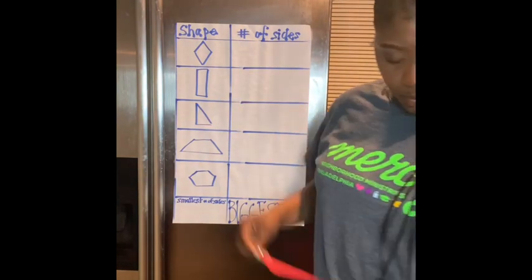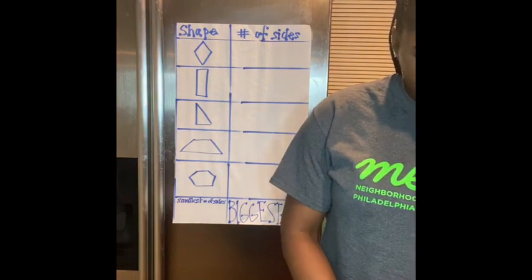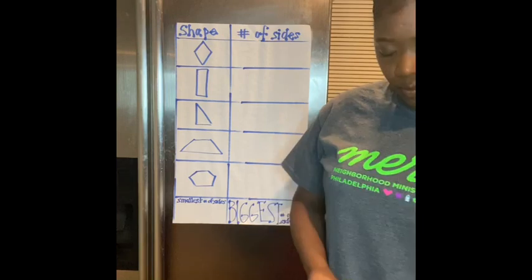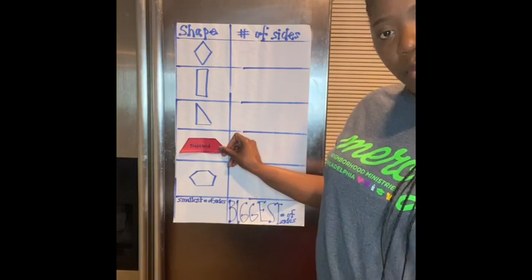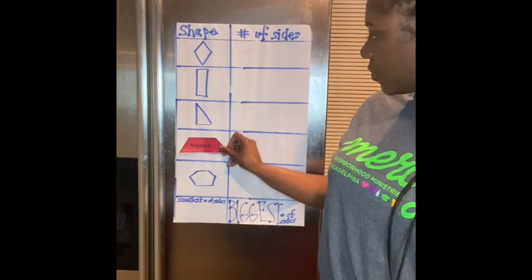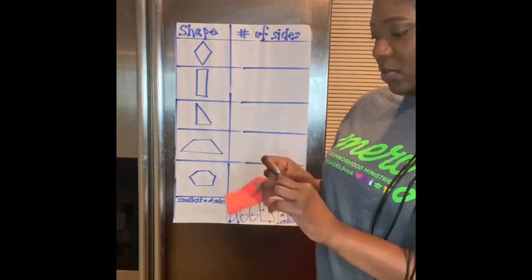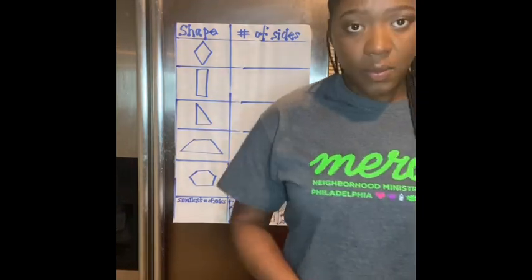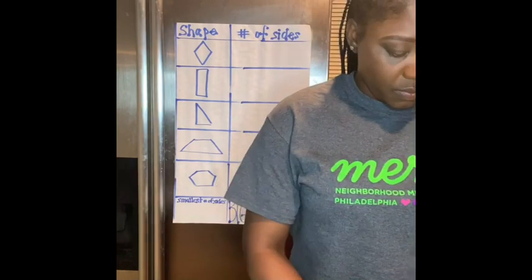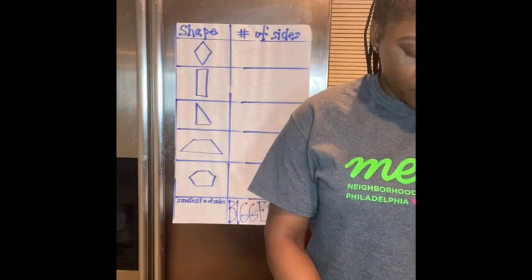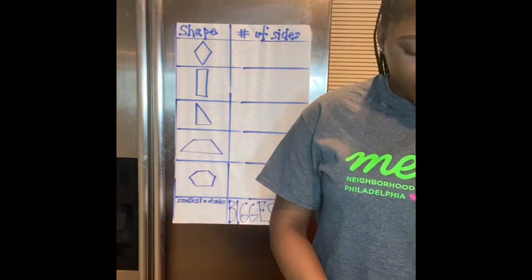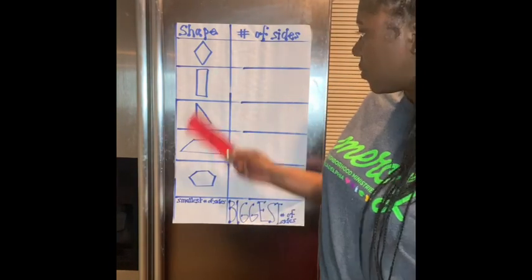Parents, today we're aiming for a level 5, which says the child interprets information or data from a representation. And we're aiming for level 6, where the child applies information and data from a representation.